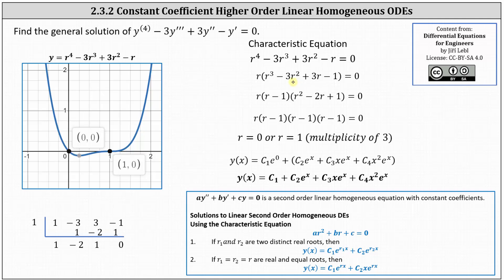Notice how the graph on the left does show the root of zero from the factor of r. And notice one is also a root, which means r minus one must be a factor of the given degree four polynomial. From here, we can perform synthetic division, which I've shown here below, where for r cubed minus three r squared plus three r minus one, we have coefficients one, negative three, three, negative one.